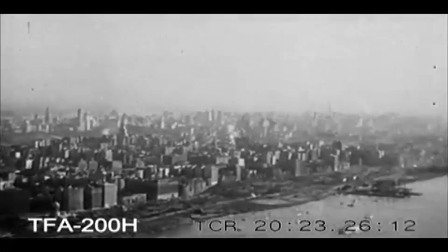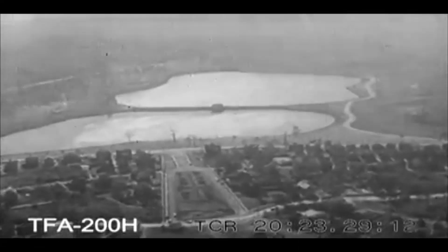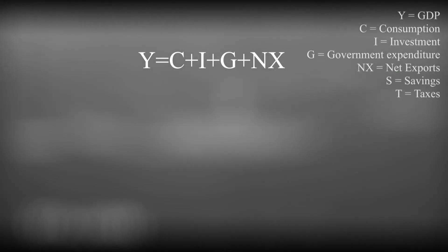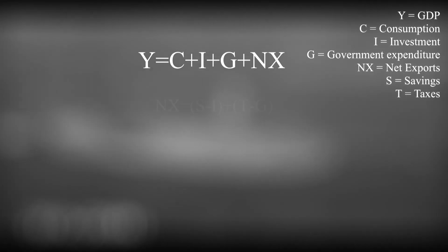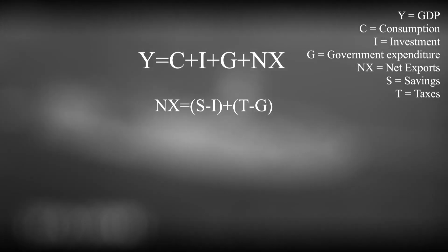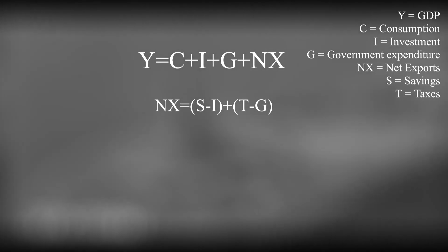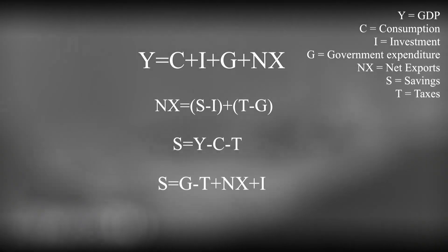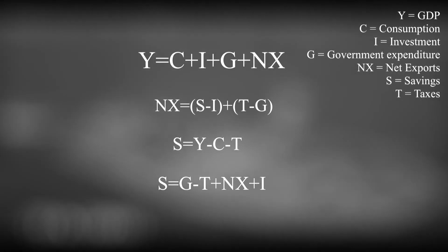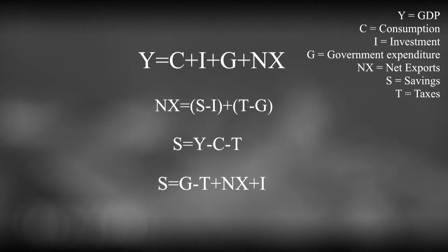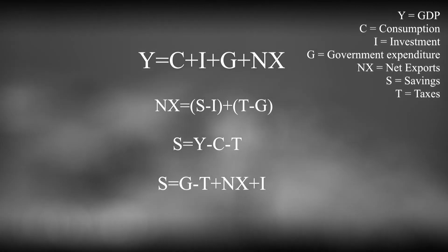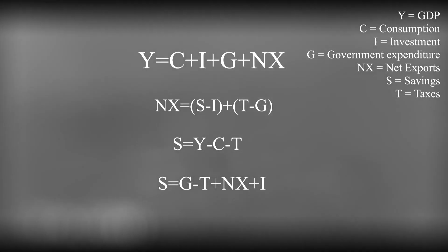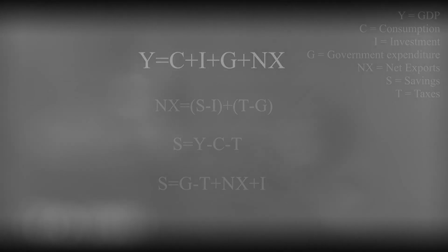According to the twin deficit hypothesis, there is a link between a budget deficit and a current account deficit. This can be explained through the macroeconomic formula: Y equals C plus I plus G plus NX, where Y is GDP, C is consumption, I is investment, G is government expenditure, NX is net exports, S is savings, and T is taxes or government income. This can be rearranged into NX equals S minus I plus T minus G. Because S equals Y minus C minus T, when combined with the original formula, this leads to S equals G minus T plus NX plus I. According to this formula, if a government runs a deficit — where government expenditure is greater than tax revenues or investment is greater than savings — this will result in a negative level of net exports and thus a current account deficit.